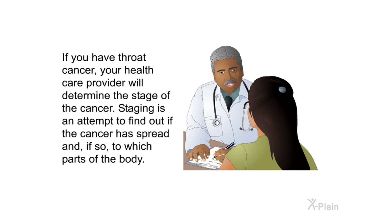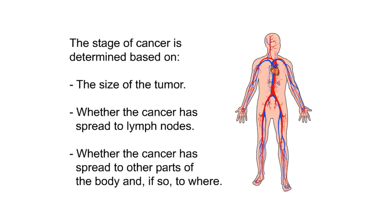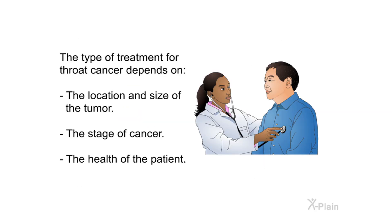Staging. If you have throat cancer, your health care provider will determine the stage of the cancer. Staging is an attempt to find out if the cancer has spread and, if so, to which parts of the body. Stages of throat cancer are usually described using the numbers one through four — a lower number indicates an earlier stage. The stage of cancer is determined based on the size of the tumor, whether the cancer has spread to lymph nodes, and whether it has spread to other parts of the body.